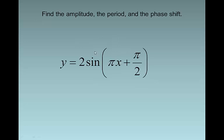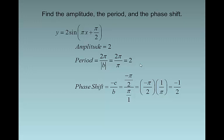Let's do another one. A is 2, B is π, and C is a positive π/2. I'm guessing this graph is going to have a negative phase shift. Amplitude is 2. Period is 2π over B, 2π over π, so our period is 2. Phase shift is negative C over B — negative π/2 over π, which I wrote as π/1 so that when I take the reciprocal I see it better. The π's cancel and we end up with the phase shift of negative 1/2. So this graph is moving to the left because we have a negative phase shift.